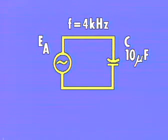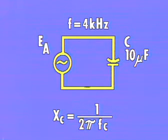Now let's analyze a circuit using the capacitive reactance equation. If we have a capacitor of 10 microfarads in a circuit with an applied frequency of 4 kilohertz,